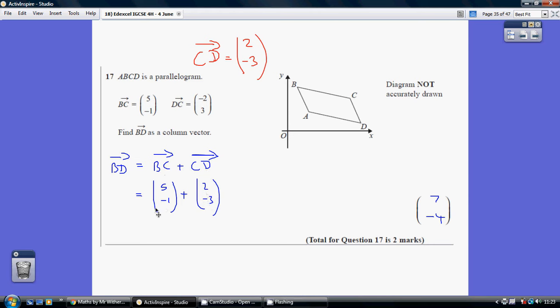How do we add vectors? We'll just literally add the top 2 and add the bottom 2. 5 and 2 is 7. Minus 1 added to minus 3 is minus 4.